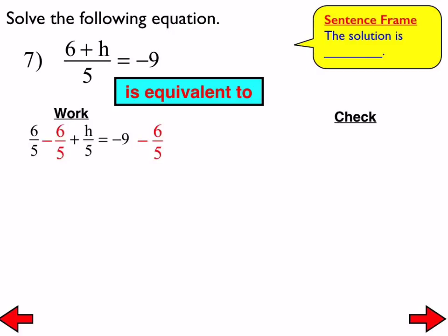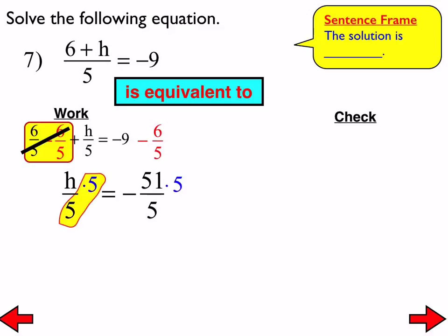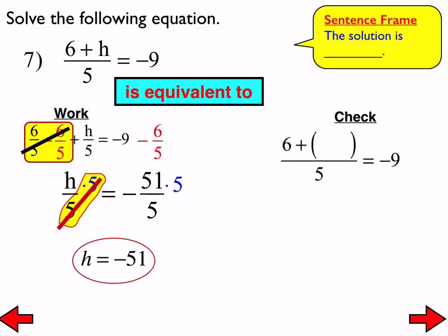For number 7, we have (6 + H) all over 5 equals negative 9. We split up (6 + H) over 5 into 6 fifths plus H over 5 equals negative 9 — that's the equivalent form. Then we subtract 6 fifths from both sides, leaving H over 5 equals negative 51 over 5. We multiply both sides by 5 — the inverse of dividing by 5 — and end up with H equals negative 51 for the solution. Checking confirms it is correct.